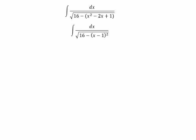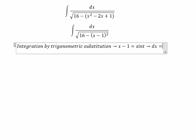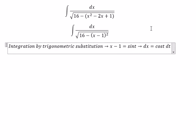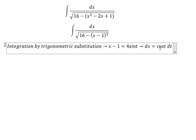And now we can use integration by trigonometric substitution. So we put x minus 1 equal to 4 sin t, dx equal to 4 cos t dt. But we have number 16 in here, so we need to have number 4, and this one should be 4.